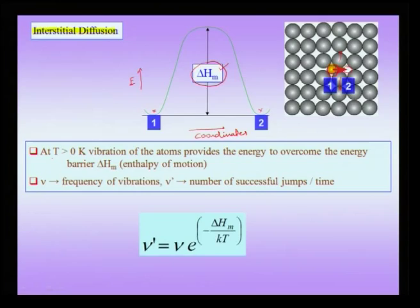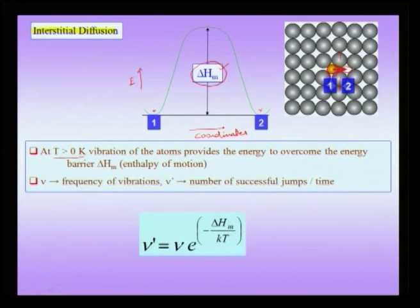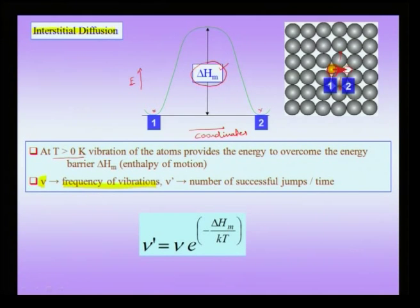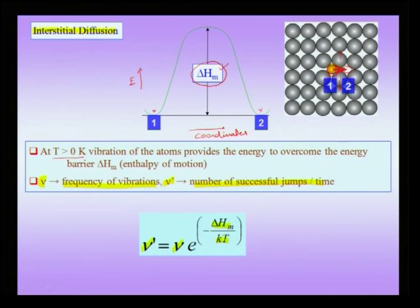At any positive Kelvin temperature atoms are vibrating, and this atomic vibration provides the energy which can overcome the barrier delta H_m, the enthalpy of motion. Suppose an atom is vibrating with frequency nu in its interstitial position — not every oscillation leads to a successful jump. Only a small fraction, labeled nu prime, can actually jump. This nu prime is related to nu by an Arrhenius equation: nu prime = nu × exp(−ΔH_m / kT). At higher temperature or with a lower barrier, more jumps will be successful.